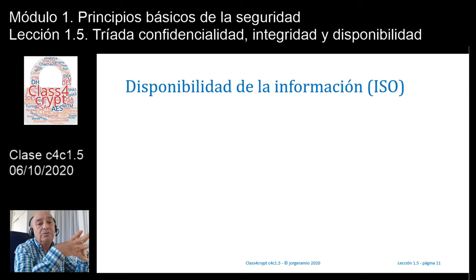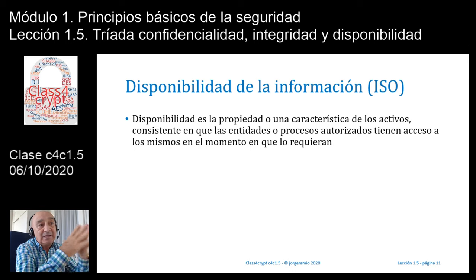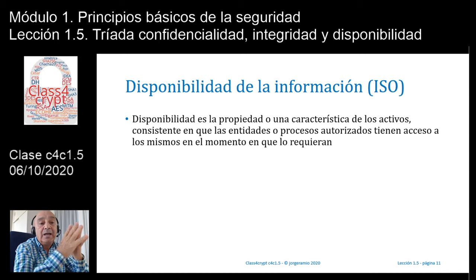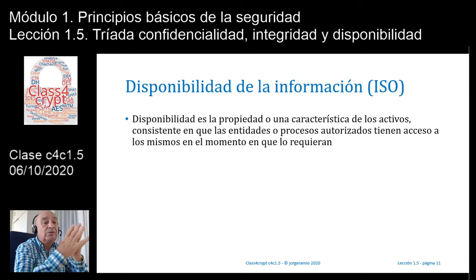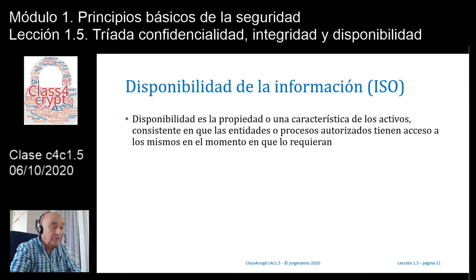Y por último, el tercer principio básico es la disponibilidad de la información. La ISO nos dice que disponibilidad es la propiedad de los activos consistente en que las entidades o procesos autorizados tienen acceso a los mismos en el momento que lo requieran. Es decir, la información puede estar disponible 24 por 7. Si quiero acceder hoy a las 11 de la noche, o mañana a las 12 del mediodía, la información tiene que estar disponible. Otra cosa es que si la información tiene cierto grado de confidencialidad, solamente las personas autorizadas son las que van a poder entrar.